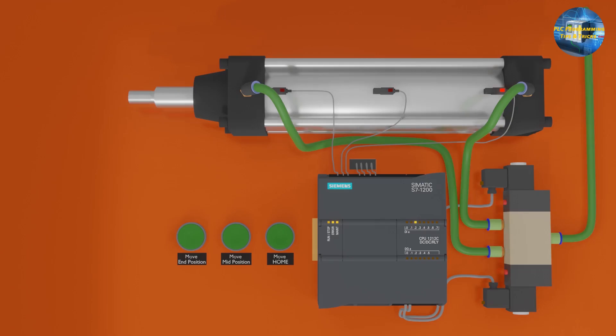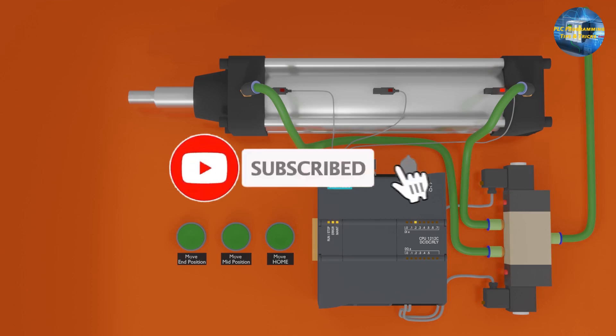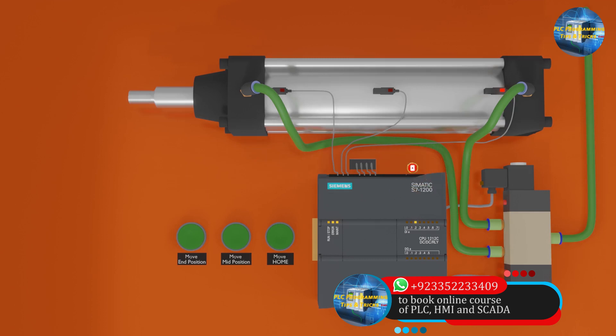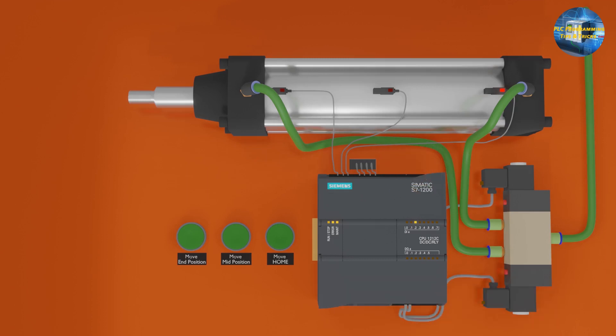So this is how we can control the cylinder with a 5 by 3 way solenoid valve using the PLC ladder logic. That's the end of today's session. If you like our videos, make sure to press the subscribe button and press the bell icon to get notifications of upcoming video tutorials. Till next time, take care and goodbye.